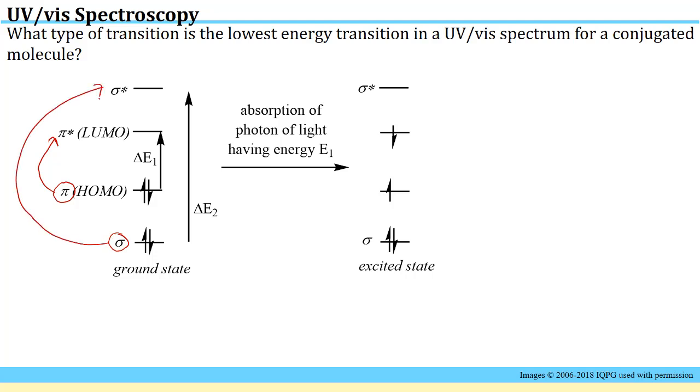Now this question asks us for the lowest energy transition in the UV-vis spectrum. The lowest energy transition is clearly going to be the pi to pi star transition, so we would represent this as shown in the primer with an arrow between the two. This is how you would write down pi to pi star transition.